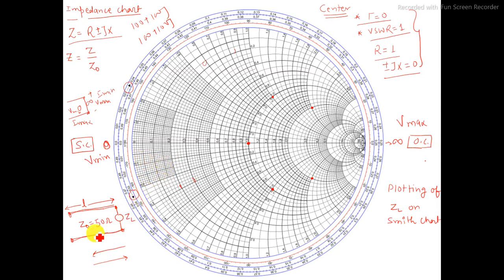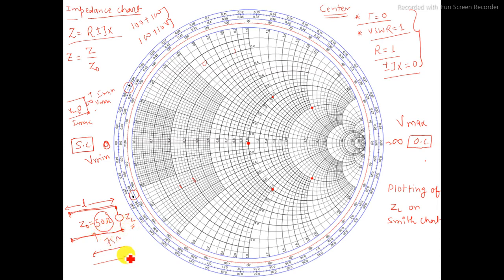Most cases that characteristic impedance is defined as 50 ohms. Whatever load value you get that you would like to match with this transmission line, first you have to normalize it with respect to the characteristic impedance. If it is 50 ohms, divide ZL by 50. If it is 75 ohms, divide by 75. If it is 100 ohms, divide by 100, and then find the normalized load value.